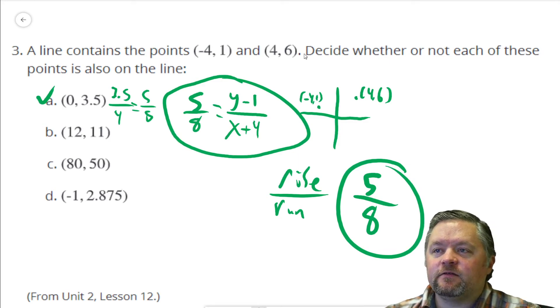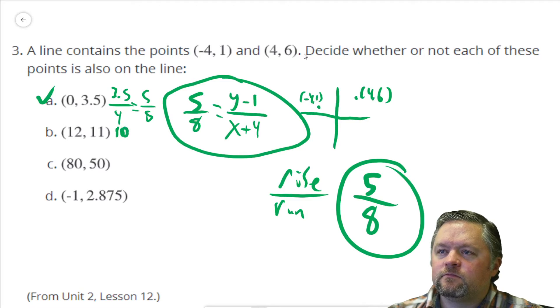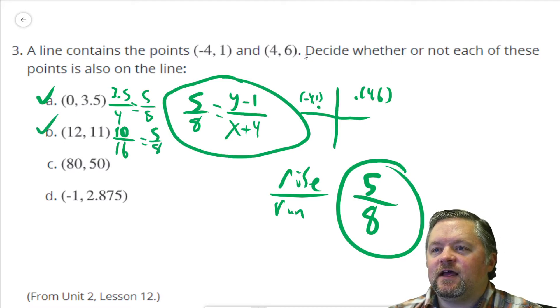12, 11. Plug it in. y minus 1 is 10 over x plus 4 is 16. 10 over 16. Does 10 over 16 equal 5 over 8? Half of both of those is 5 over 8. That one passes the test.